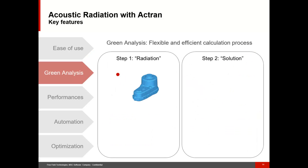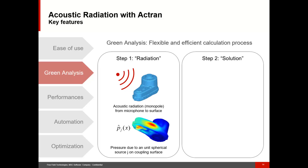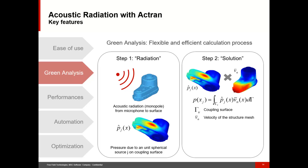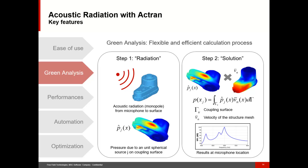The next key feature I would like to present is green analysis. Green analysis is a two-step calculation technique based on the reciprocity principle. If you need to compute the acoustic radiation from a blue surface to a red microphone, the first step consists in replacing the microphone by a monopole source and computing the pressure field on the blue surface. This pressure field is independent of the structure vibration — it only depends on the structure geometry and the microphone location. On a second step, this pressure field is multiplied by the structure vibration and integrated over the surface. Thanks to the reciprocity theorem, this gives us the sound pressure at the microphone location.